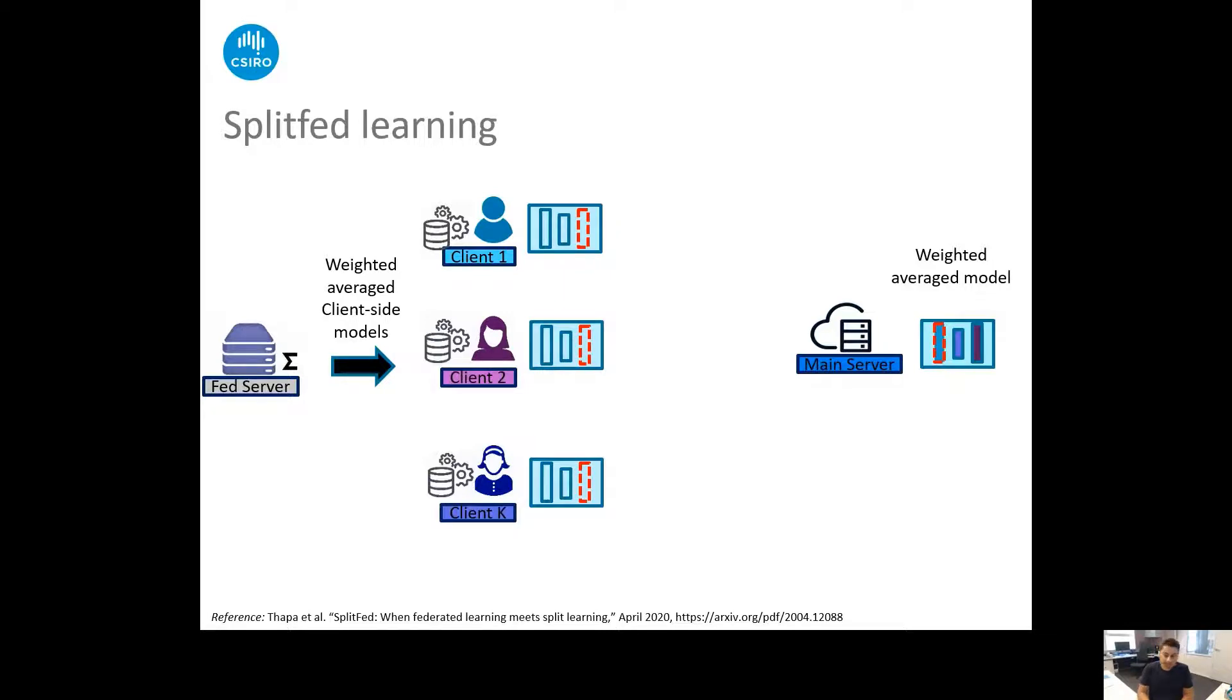The main server can be FED server here but in this case all the operations must perform in encrypted form something like homomorphic encryption which does not allow the main server to learn anything about the client-side model updates. But for simplicity we keep the separate FED server at the client-side. The training happens as described and we call this approach the split FED version 1. Why version 1? We now go to this point.